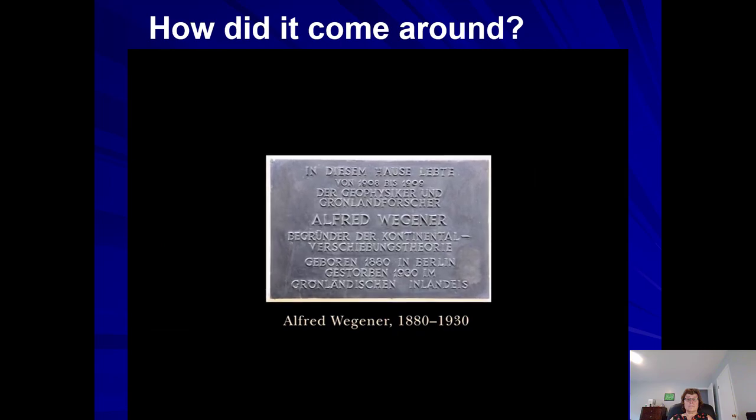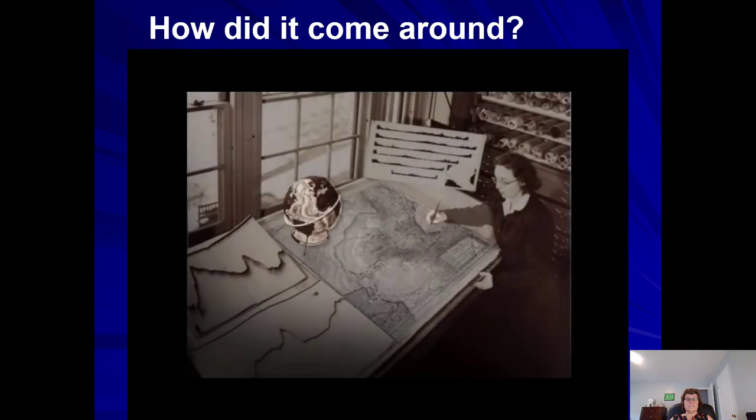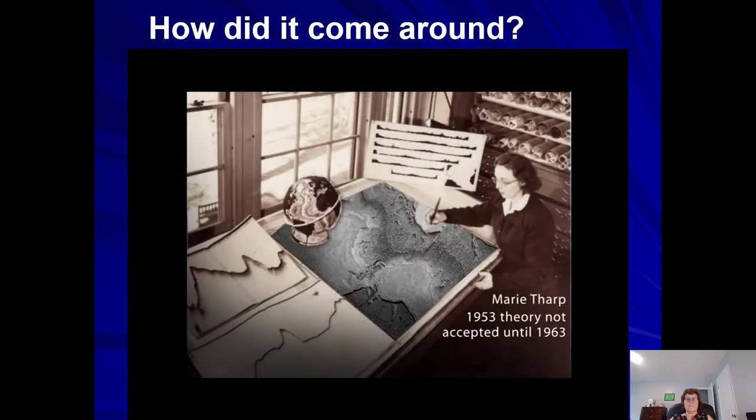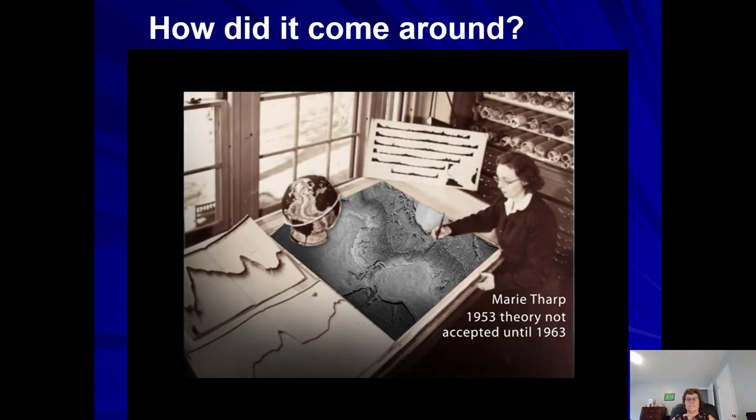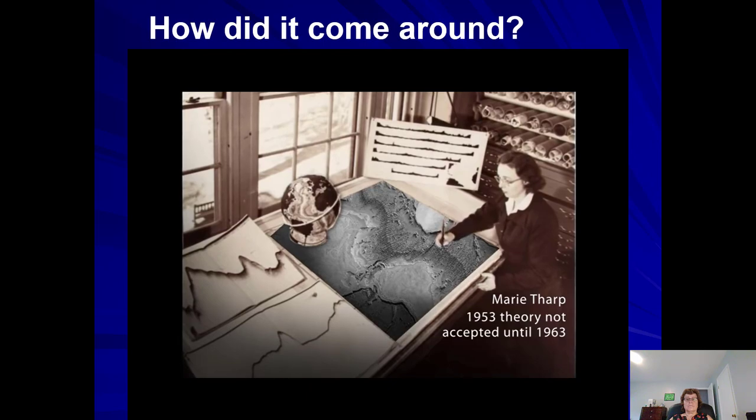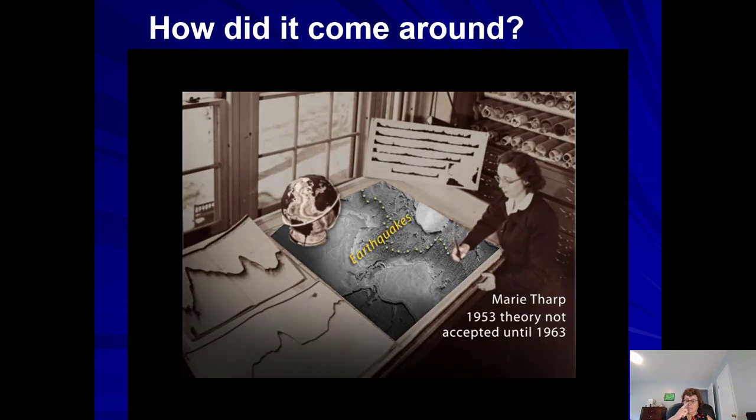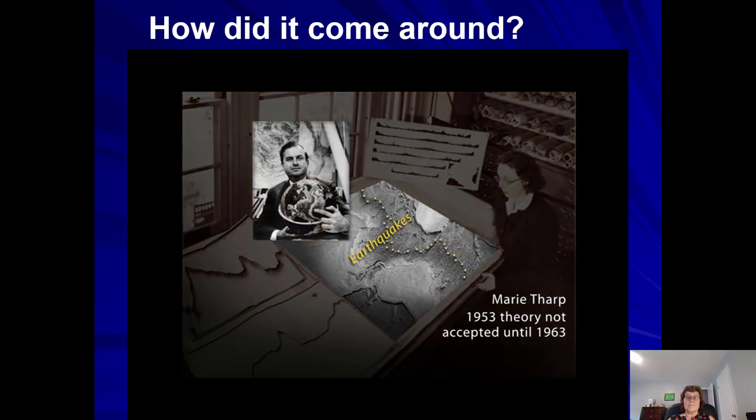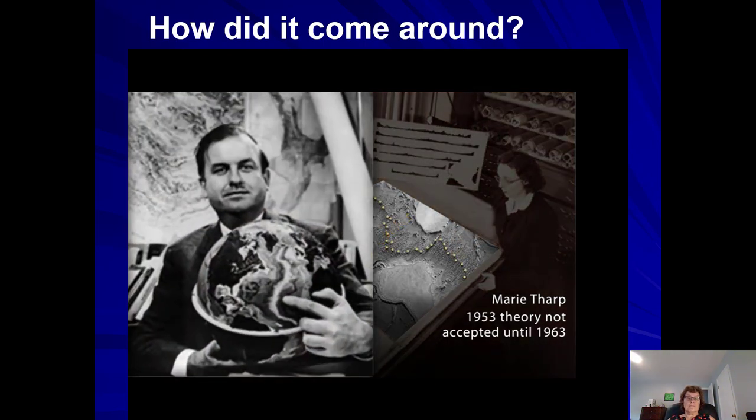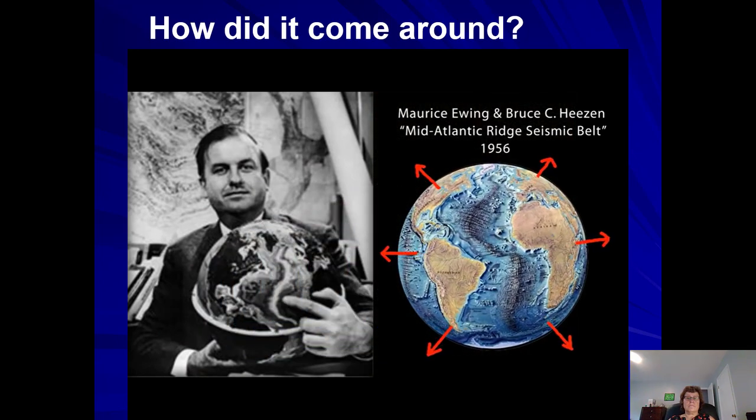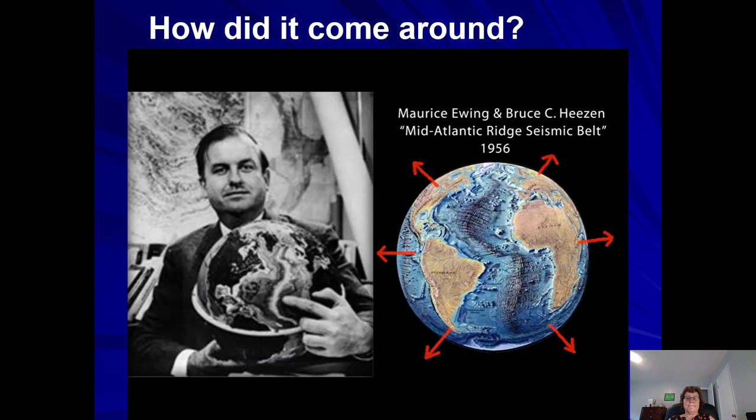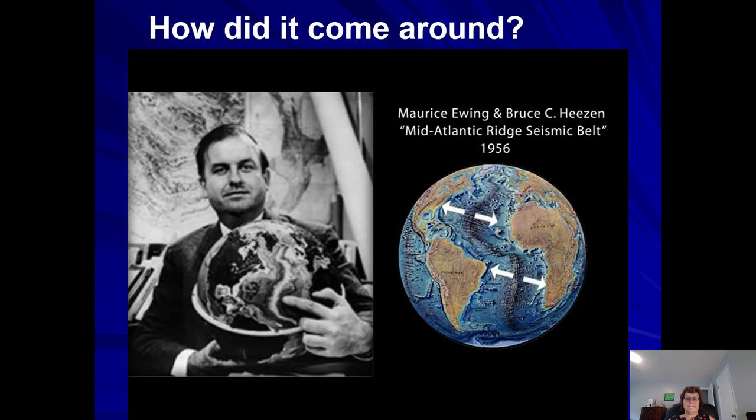Decades after Wegener's death, geologist Marie Tharp, left in the lab to examine data from ocean floor field surveys, theorized that mid-ocean ridges appeared to be extensional rift valleys formed by plate motion, thus paving the way for the acceptance of Wegener's continental drift theory. Her colleague, Bruce Heezen, initially skeptical, published her work in 1956 under his name, but ascribed the extension to an expanding earth theory. It wouldn't be until the mid-sixties that he would accept Tharp's interpretation of plate motion.